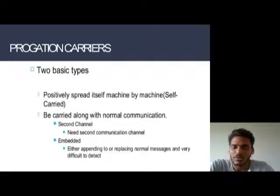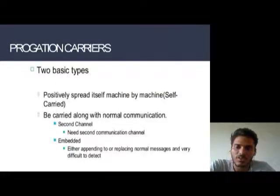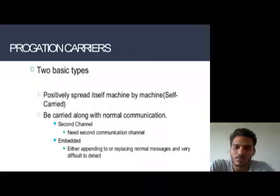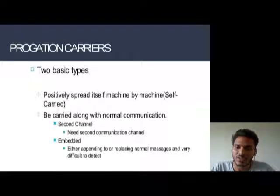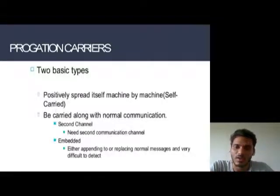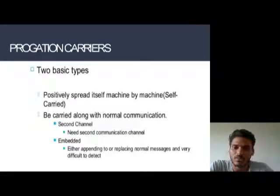Propagation carrier: there are two basic types. First, positively spread itself — machine by machine, self-carried. Second, carried along with normal communication, which has two sub-types: second channel and embedded. Second channel means a separate communication channel is needed. Embedded means either appending to or replacing normal messages, making it very difficult to detect.